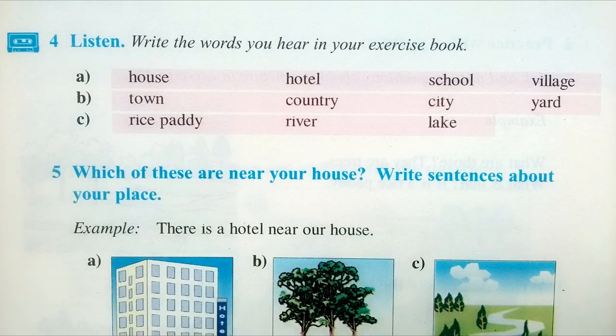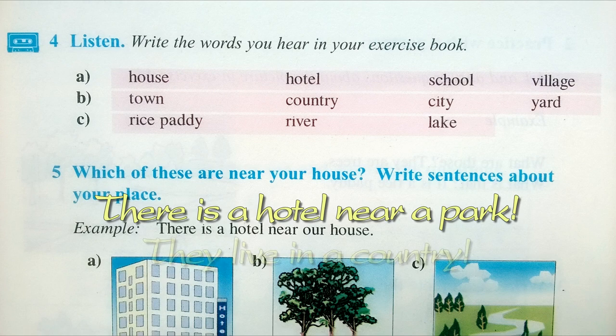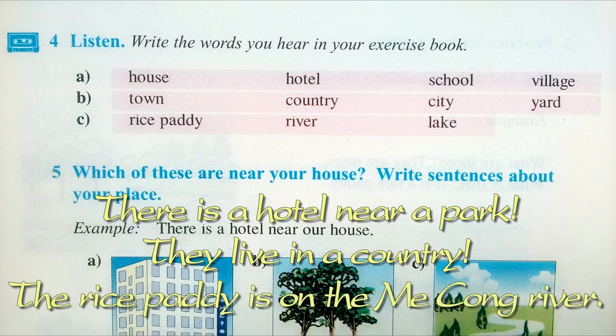Exercise 4. Listen. Write the words you hear in your exercise book. 1. There's a hotel near the park. 2. They live in the country. 3. The rice paddy is on the Mekong River.